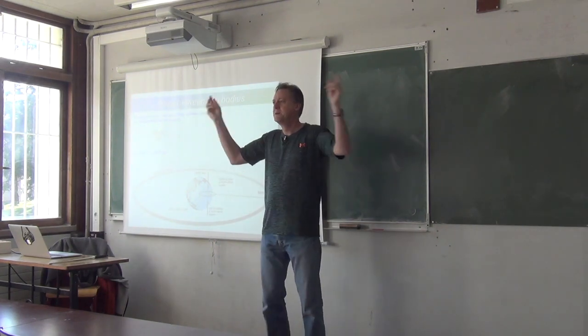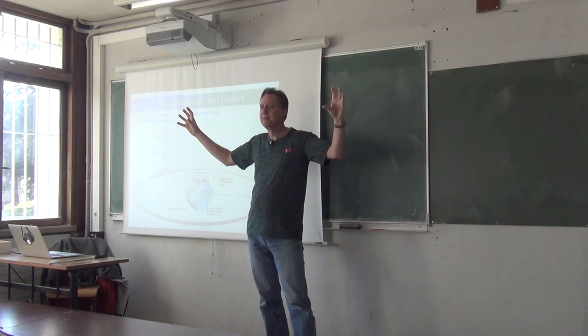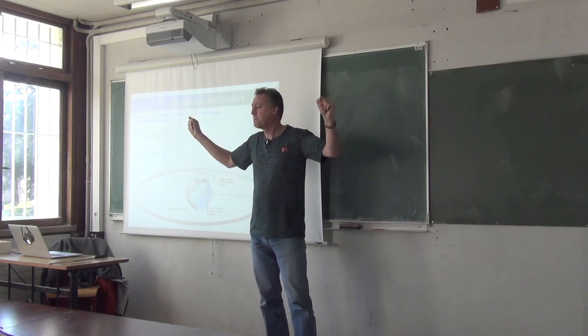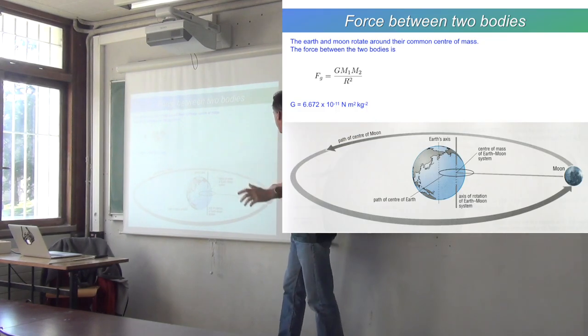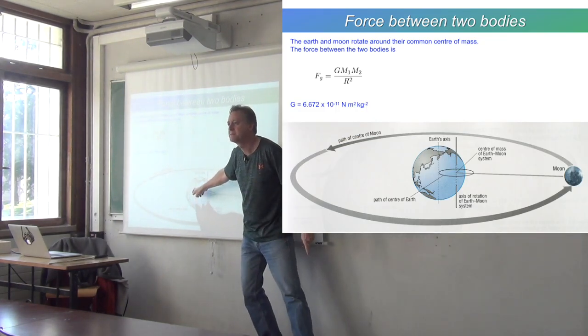They'd both go around their common center of mass, which would be halfway between the two. This is basically what's happening with the Earth and the Moon. The Moon does not just go around the center of the Earth, which is nailed in place, and that's very important.